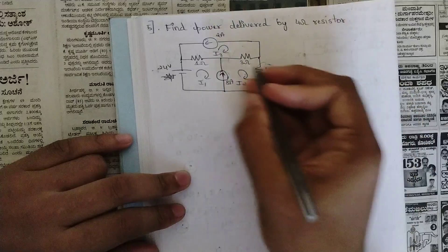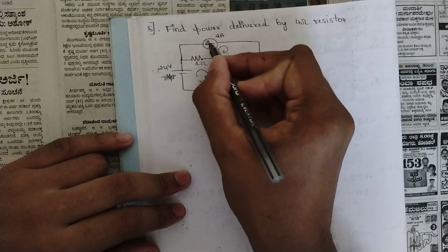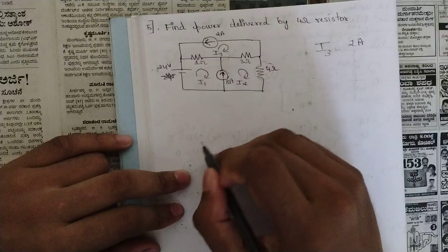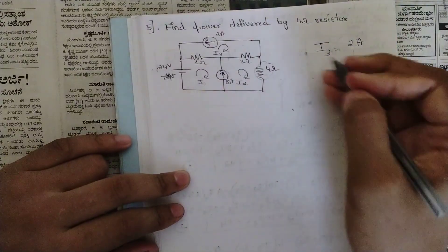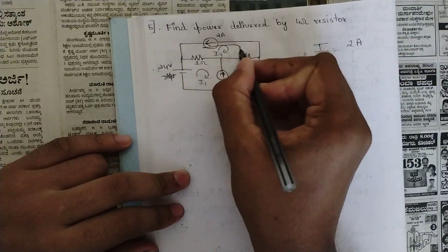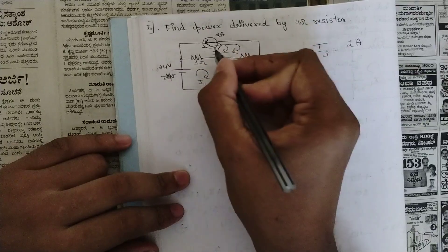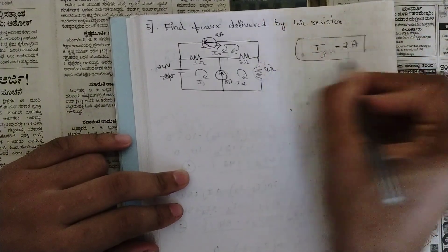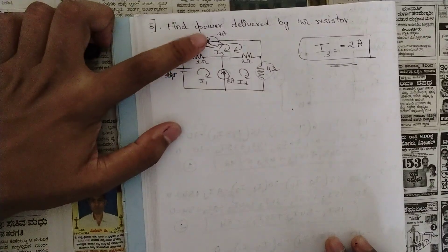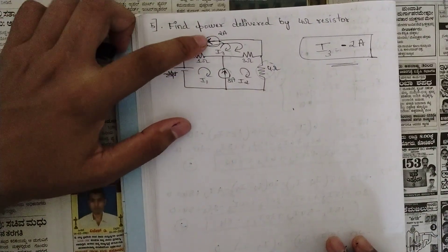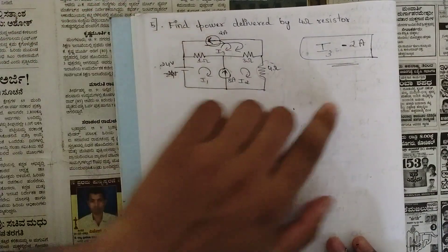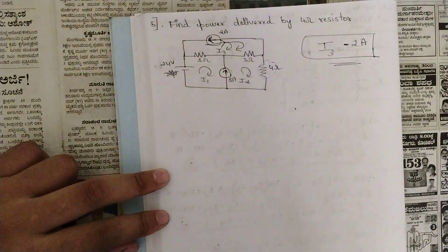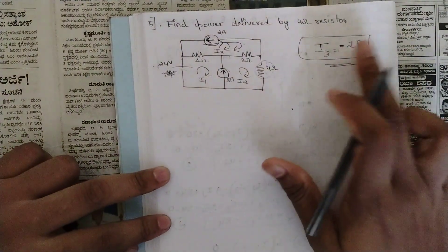In the third loop, i3, we already have a current source so we can directly write i3. However, the direction of the loop I considered and the direction of the current are opposite, so i3 equals minus 2 ampere. The direction matters a lot: if the loop direction and current source direction are the same, the value is positive; if different, it is negative.